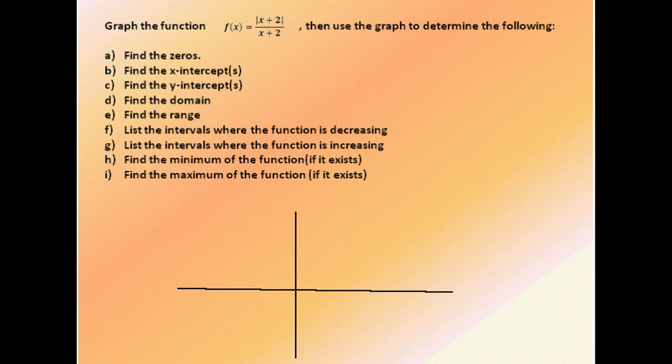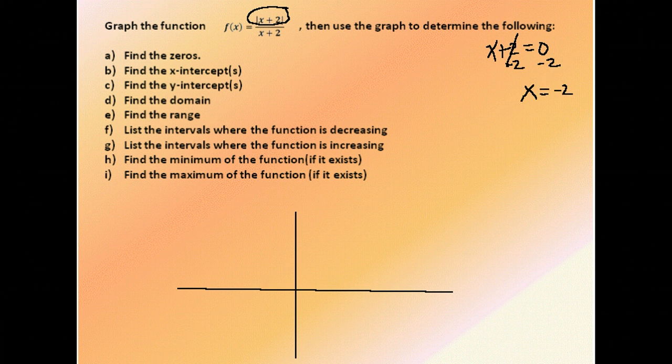So what we want to do is say, well, where might that happen? And it's going to be wherever the inside would become zero. So I'm going to find out where that is. Another problem with this function is that we can't have a denominator equal to zero. So if x is negative 2, that would give us a denominator of zero. So negative 2 is going to be undefined for our answer here.